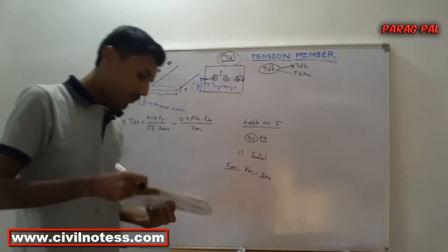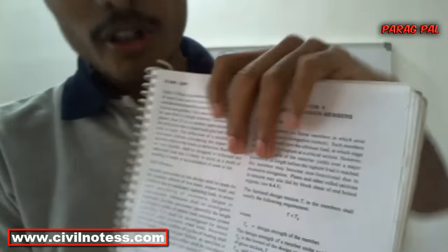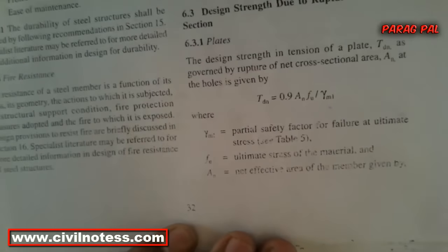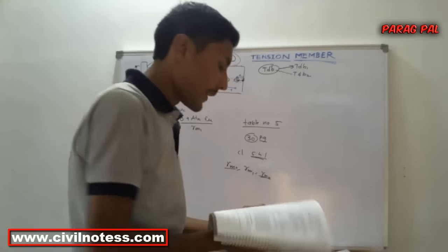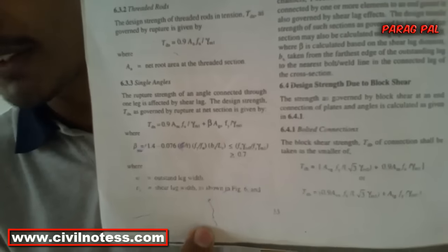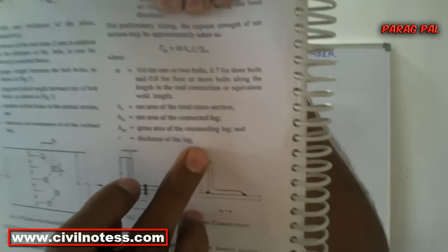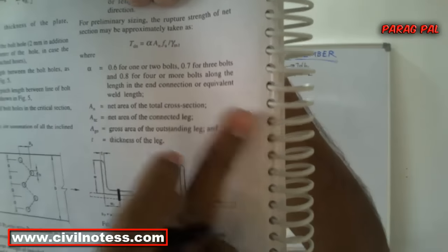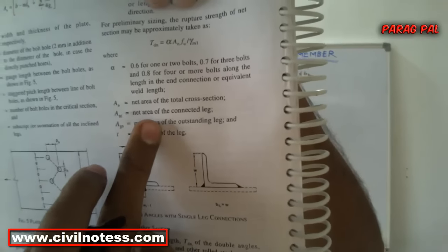Now from clause 6.2, this is the clause for design of compression and tension members. Here is the Tdg formula, and the Tdn formula for a plate — but we are not going to solve for a plate, we are solving for the bolted connection value. The beta value is also given, and all formulas are on page 33 of IS 800:2007. The alpha formula values are listed: 0.7 for three-bolt connections, and 0.8 for welded connections or four or more bolts.